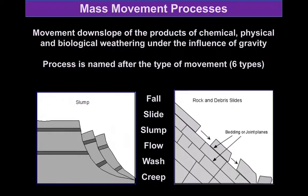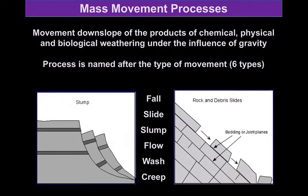So if we think about the types of processes that do occur, depending on how the material moves, we could have a fall, a slide, a slump, a flow, a wash, or even creep of soil — all at different speeds, all with slightly different mechanisms. All of these, though, will occur where gravity is overcoming the friction that holds the slope in place.